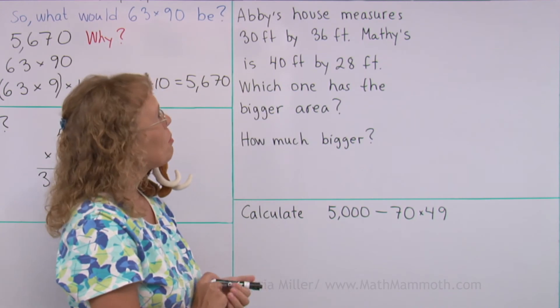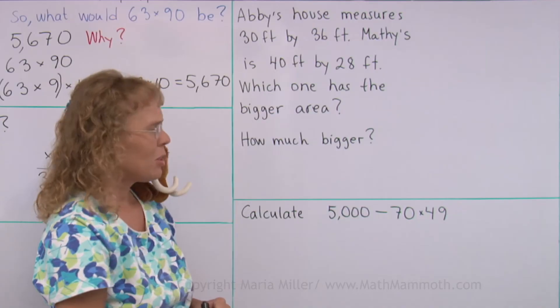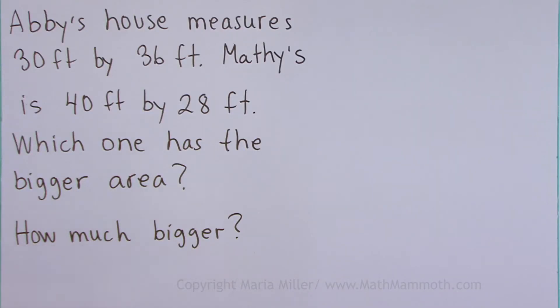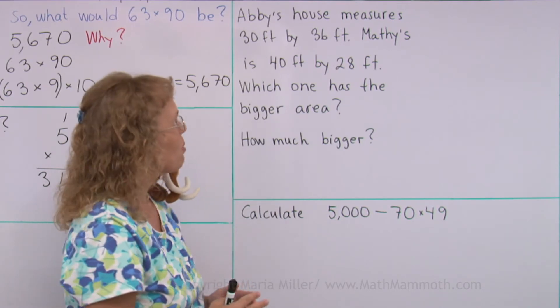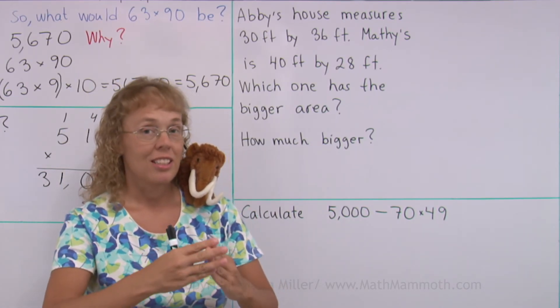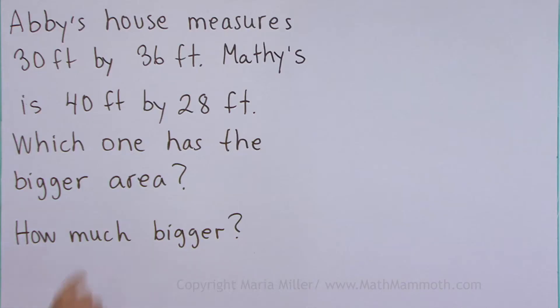Abby's house measures 30 feet by 36 feet. Matthew's house is 40 feet by 28 feet. So, yeah, Matthew, you have a good size house. Which one has the bigger area? How much bigger? For the area of a rectangle, you of course multiply the side lengths. So, our task is first to multiply those two numbers. Then we also need to multiply those two.